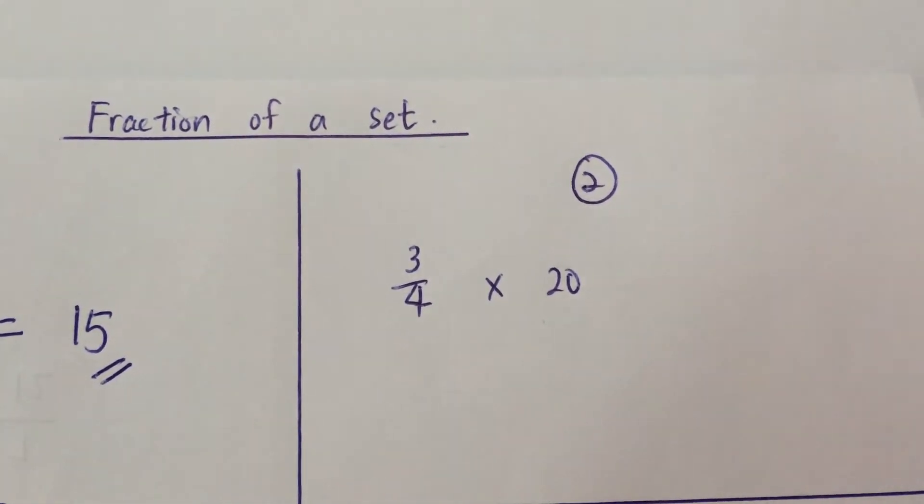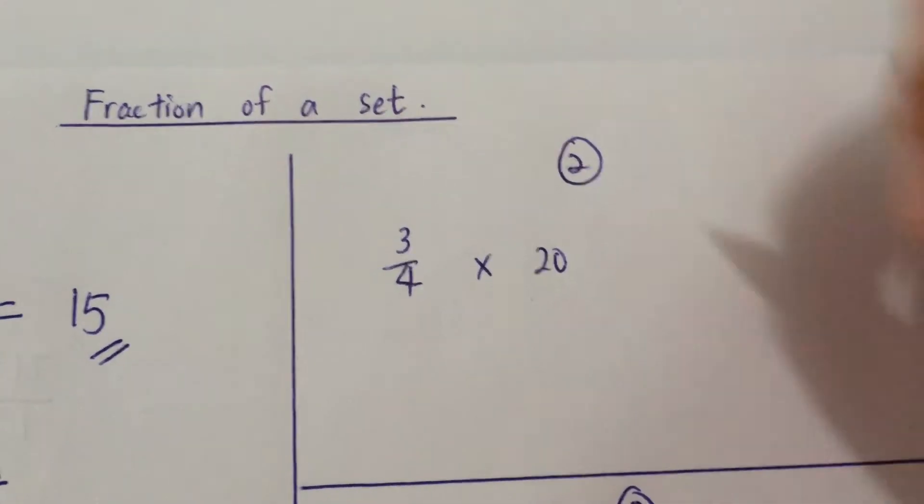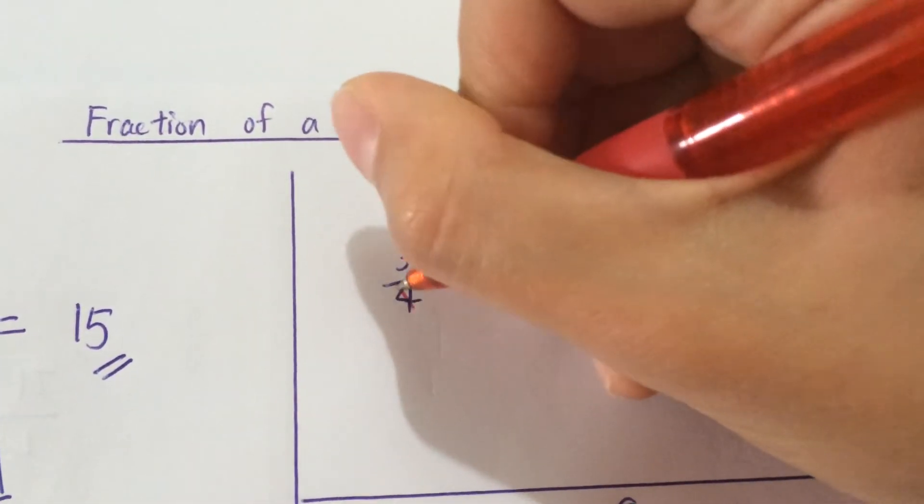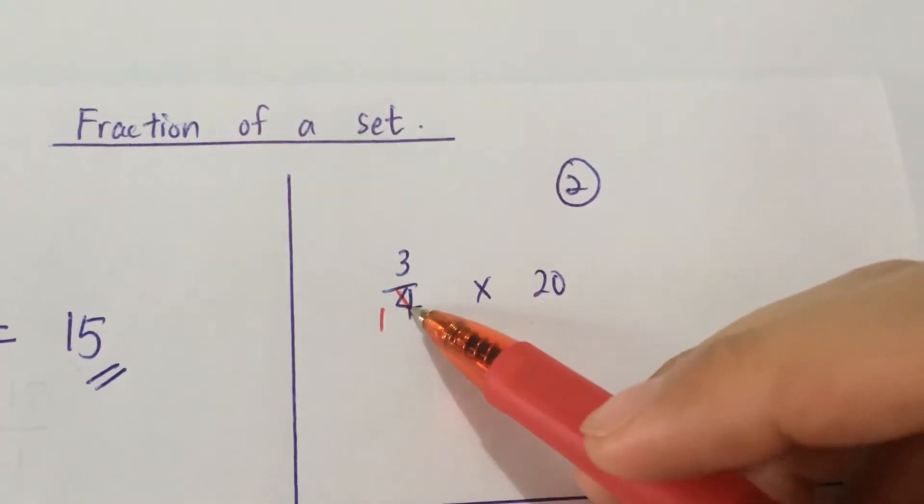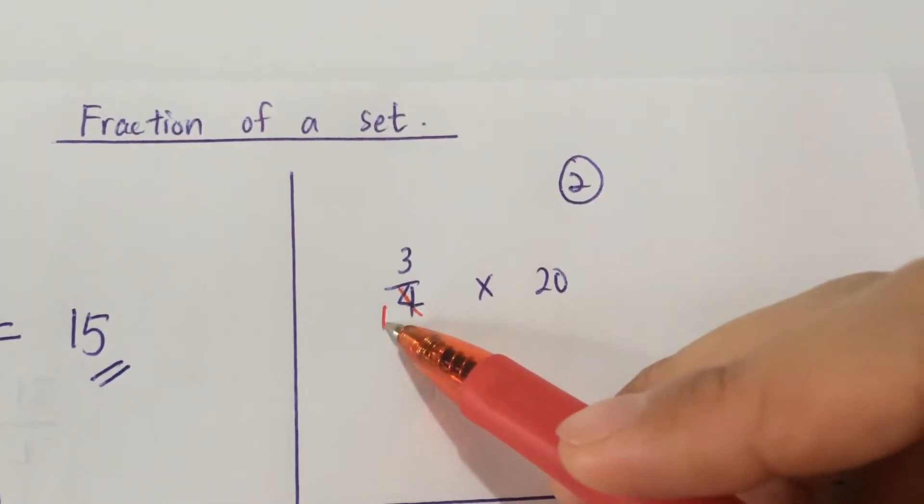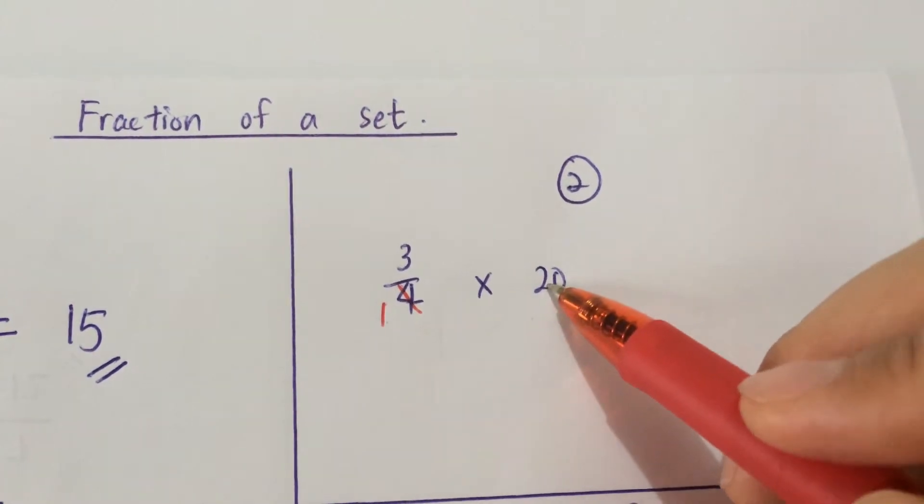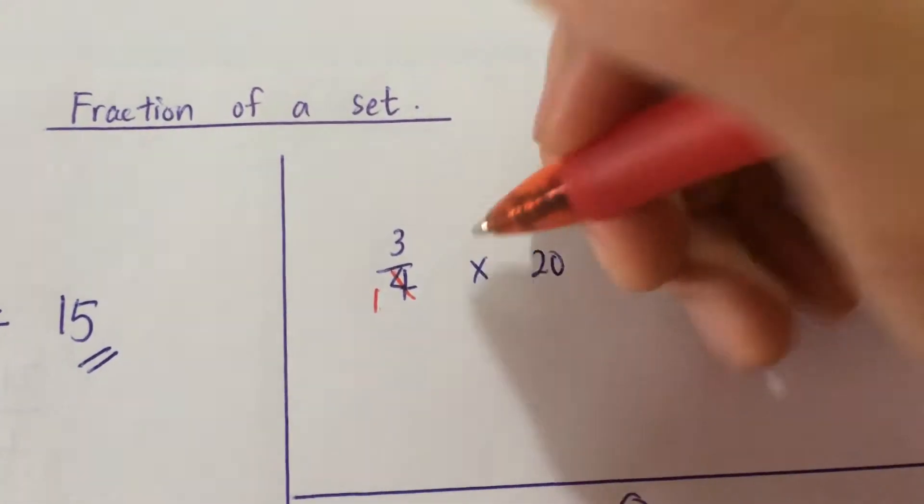You just have to make this 1. 4 divided by 4 gives me 1. 20 divided by 4 gives me 5.